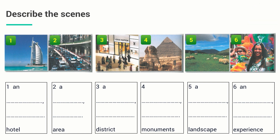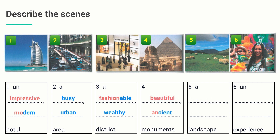Have you finished? Let's check out the answer together. Which two adjectives may you use to describe the first scene? You can use impressive and modern — an impressive modern hotel. Two: a busy urban area. Three: a fashionable wealthy district. Four: beautiful ancient monuments. Five: a peaceful rural landscape. And six: an exciting colorful experience.